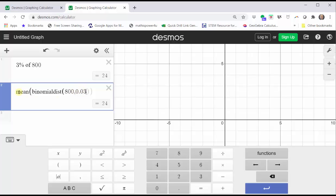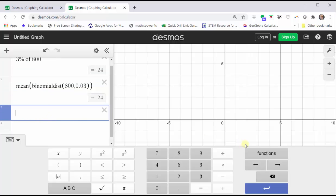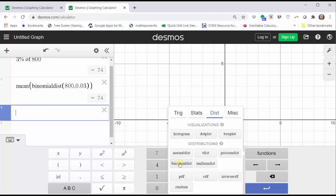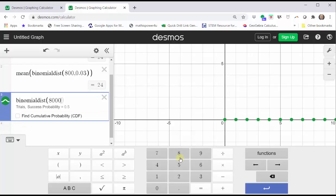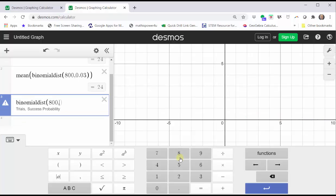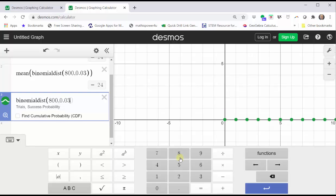While we're here, let's also graph the binomial distribution. Let's click in cell three, click functions, click binomial distribution, enter n, the number of trials, which is 800, comma, the success probability, or probability of the genetic mutation, which is 0.03 as a decimal.